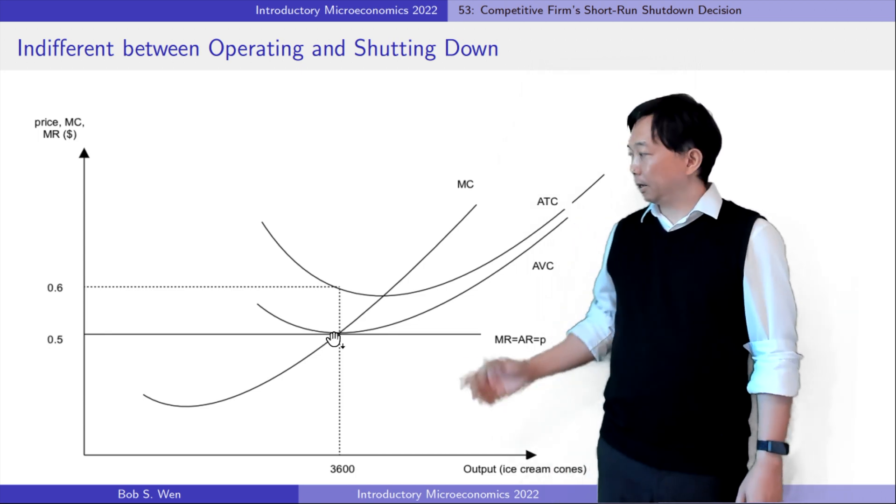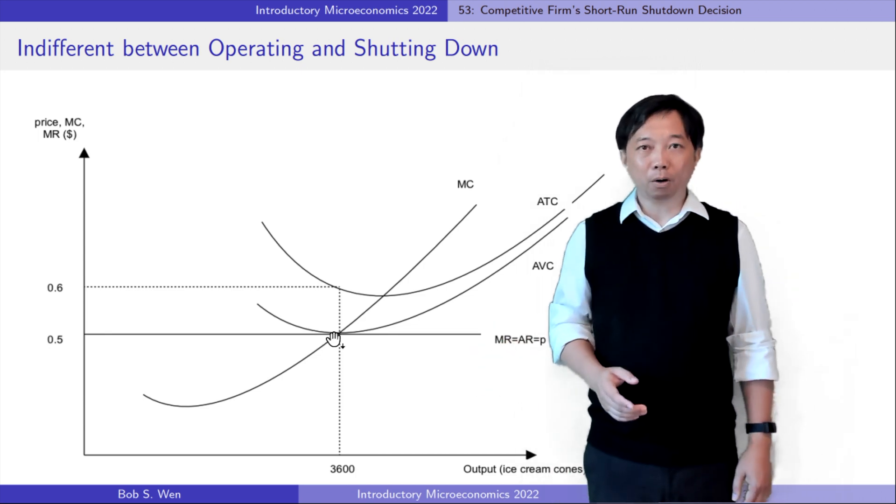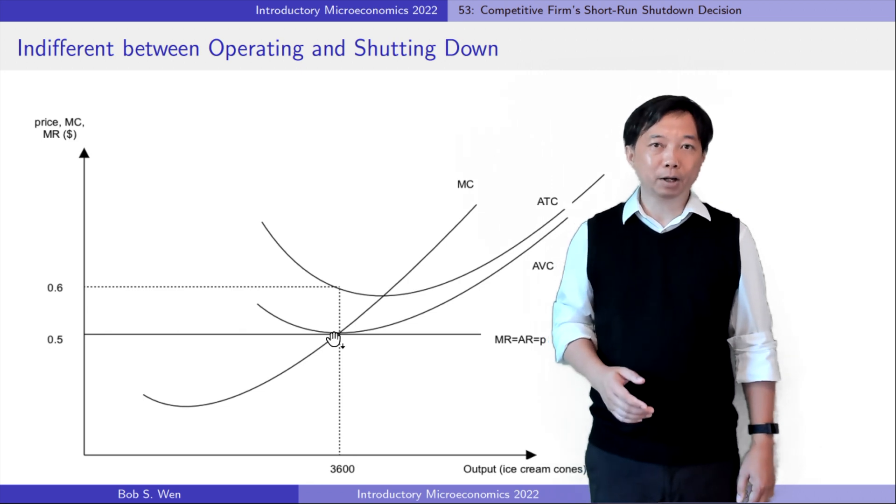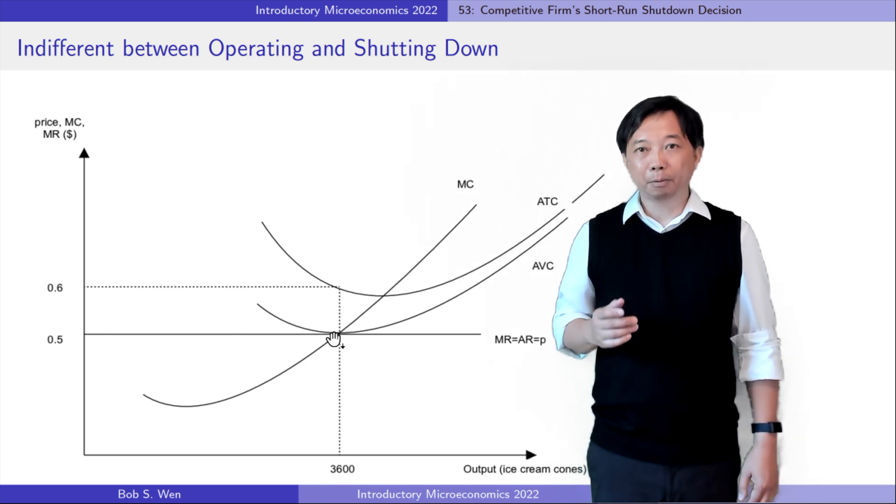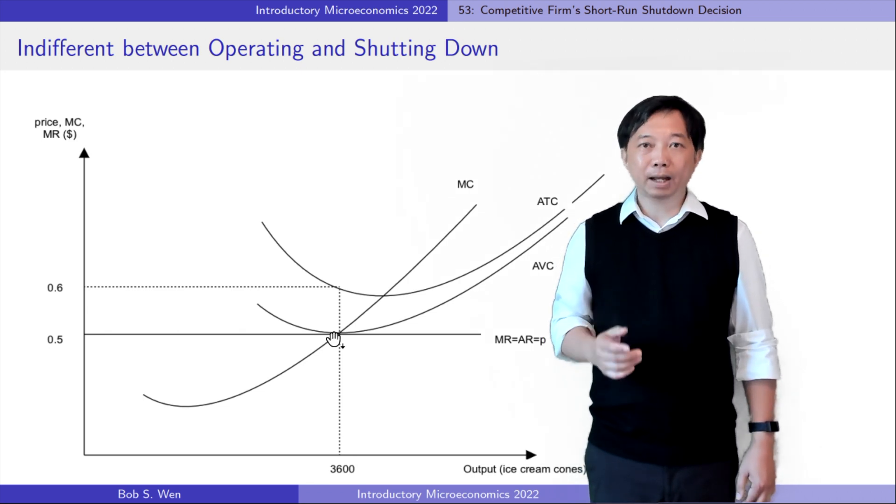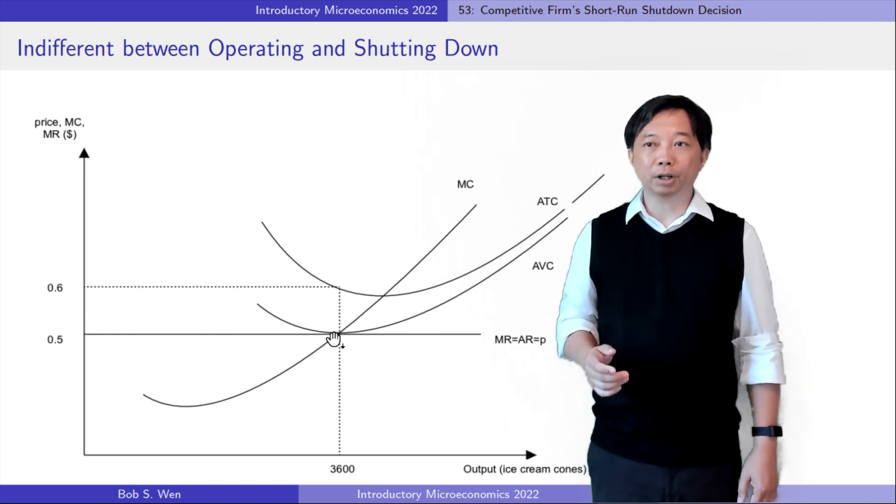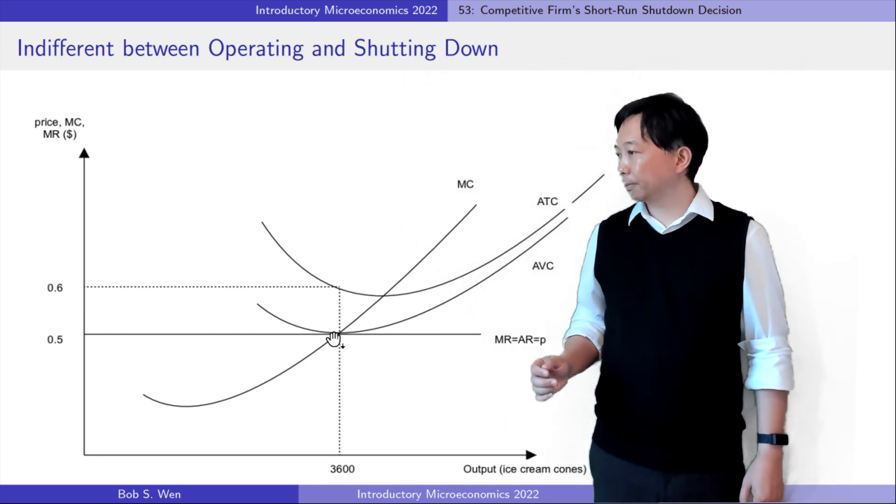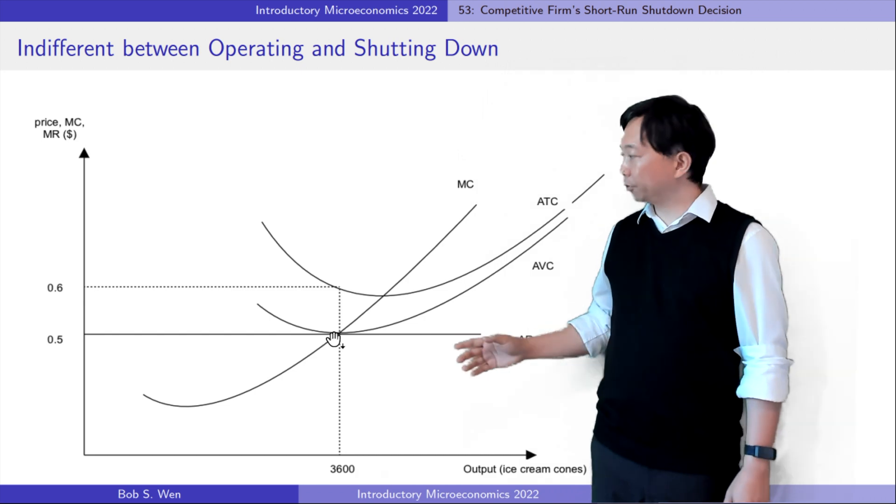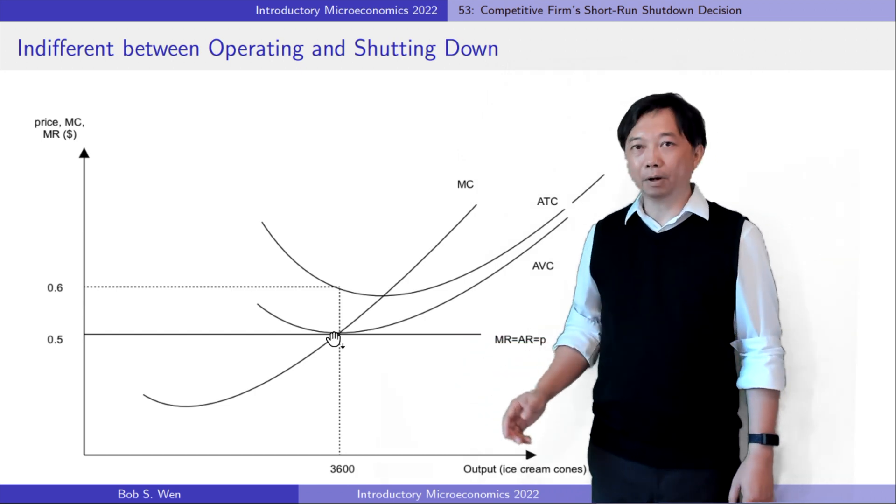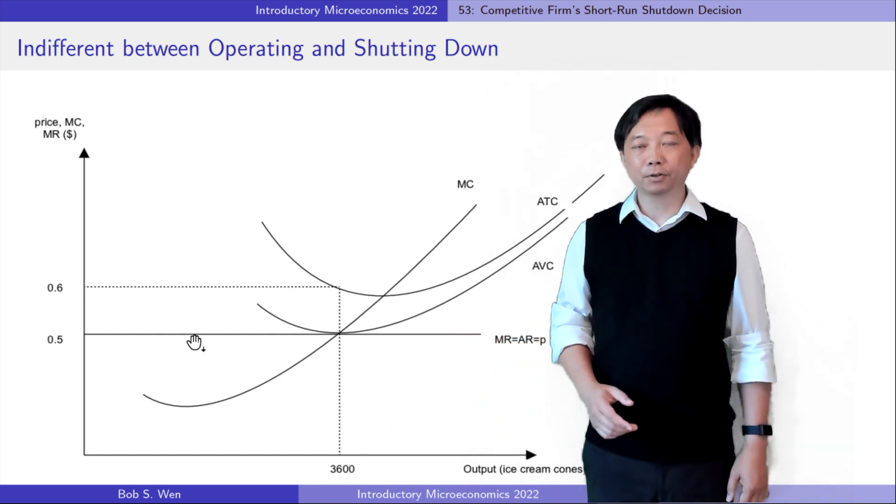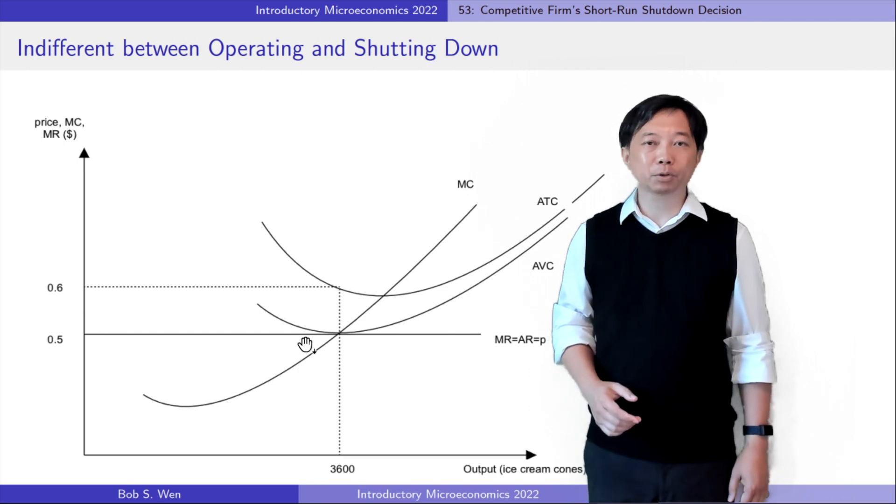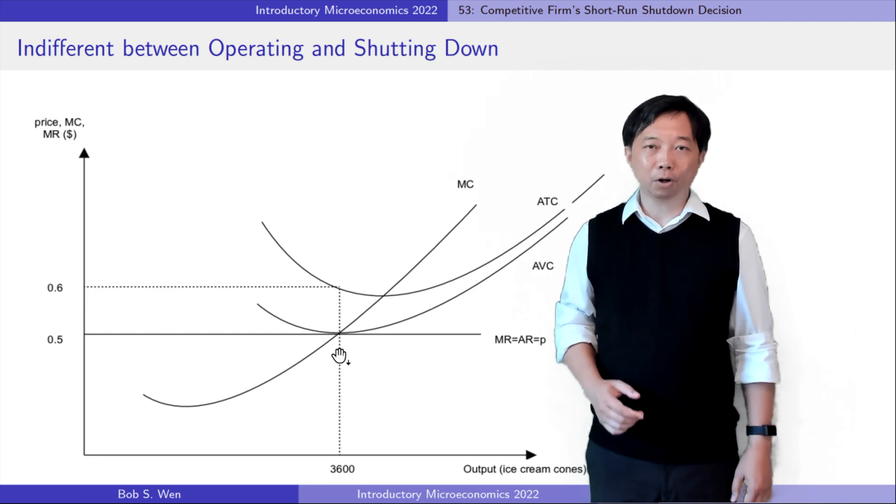Suppose the average variable cost is equal to the market price at the profit maximizing output level of 3600 ice cream cones. As the graph shows, if the ice cream firm operates at this point, it earns a profit of 0.5 times 3600, which is 1800 dollars.